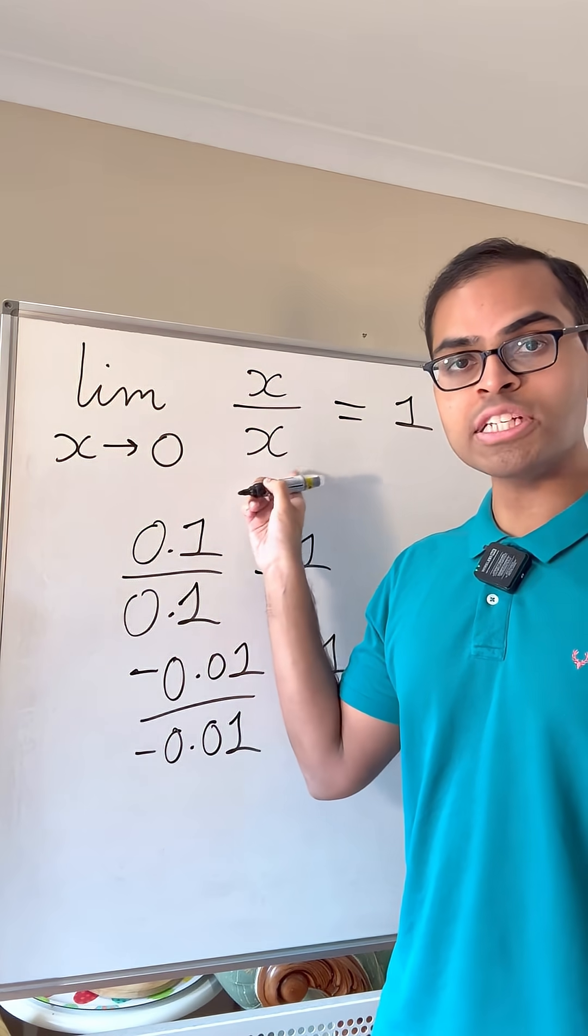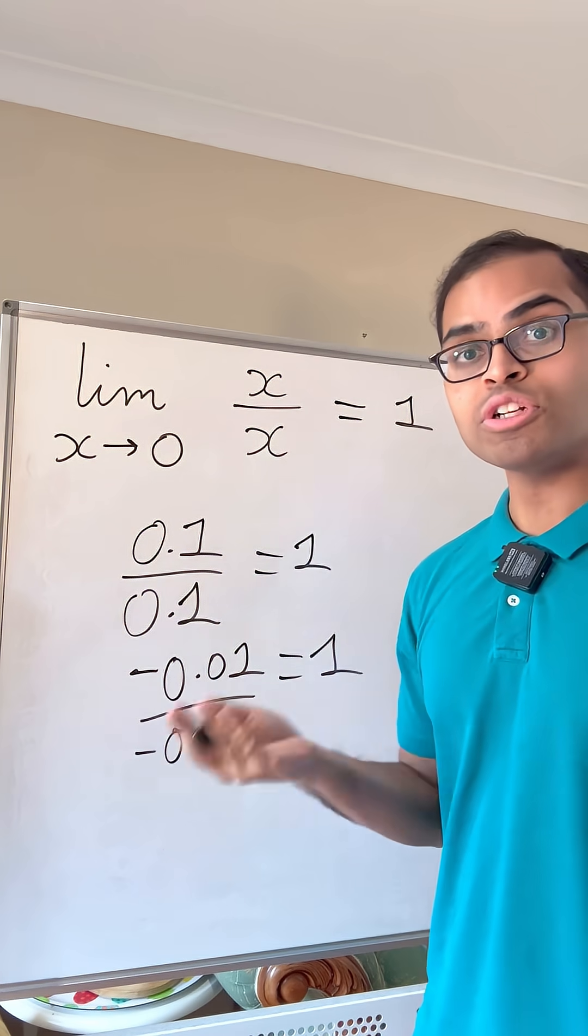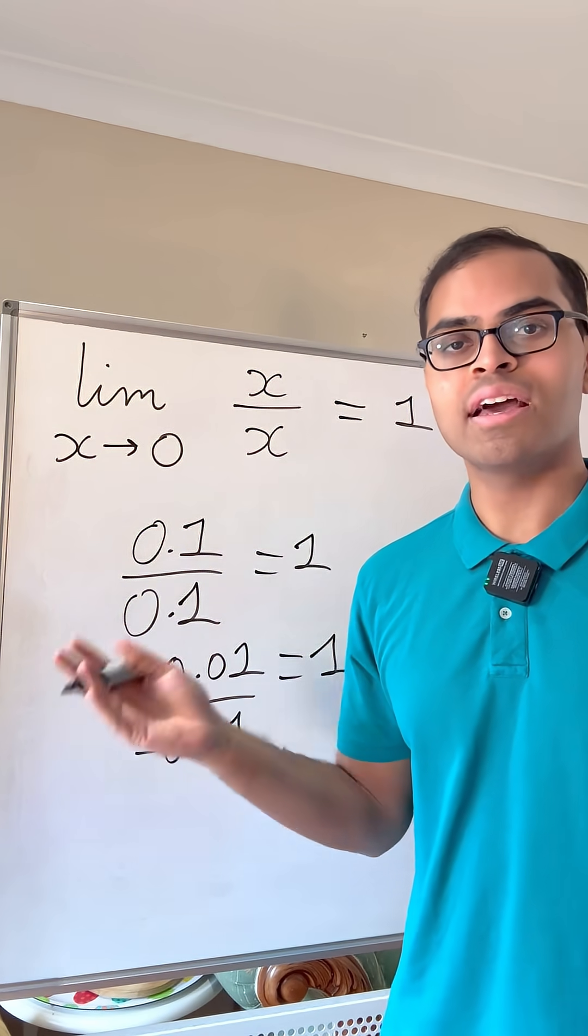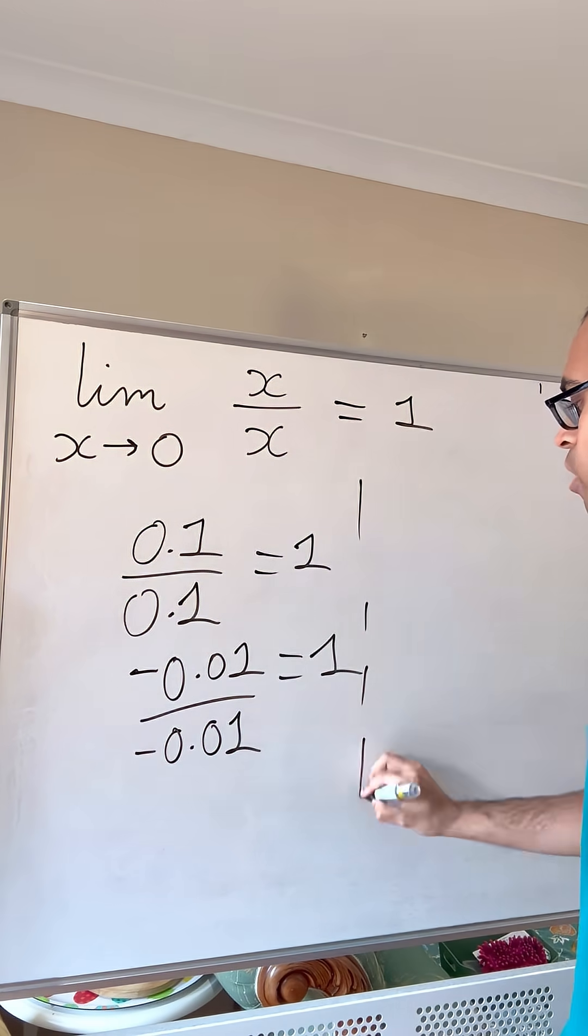But the value of this expression x over x does not exist at 0, even though it approaches 1, or it's always equal to 1 in our case, as x approaches 0. It doesn't exist when x equals 0, and this is an important point.